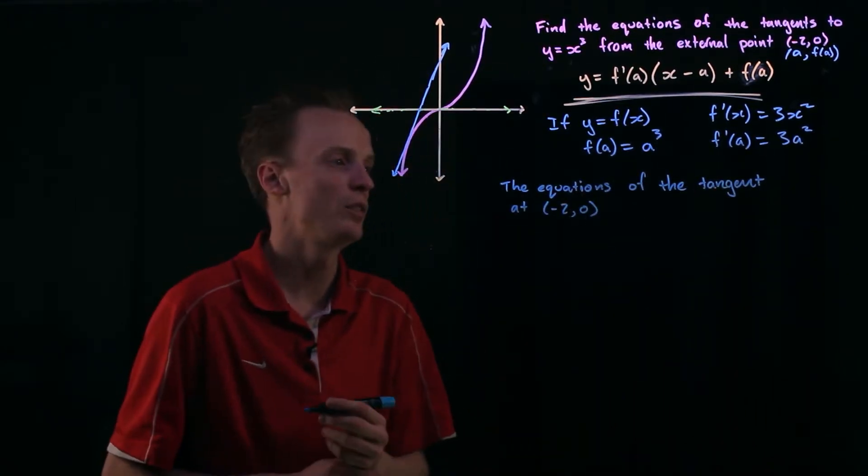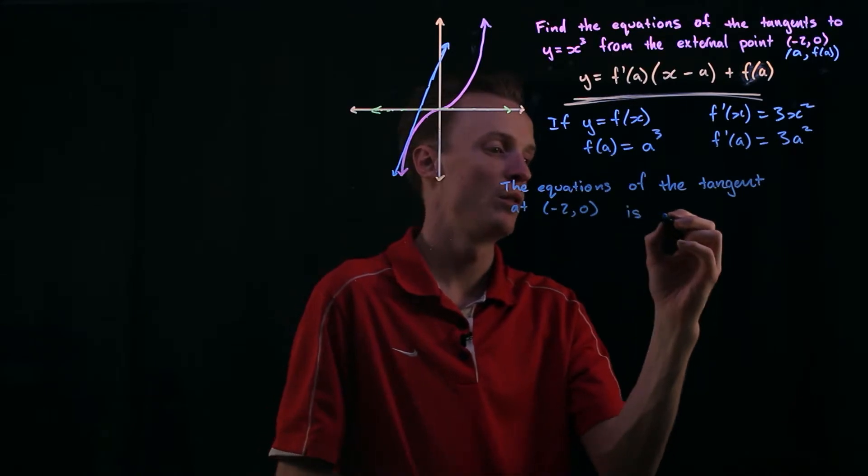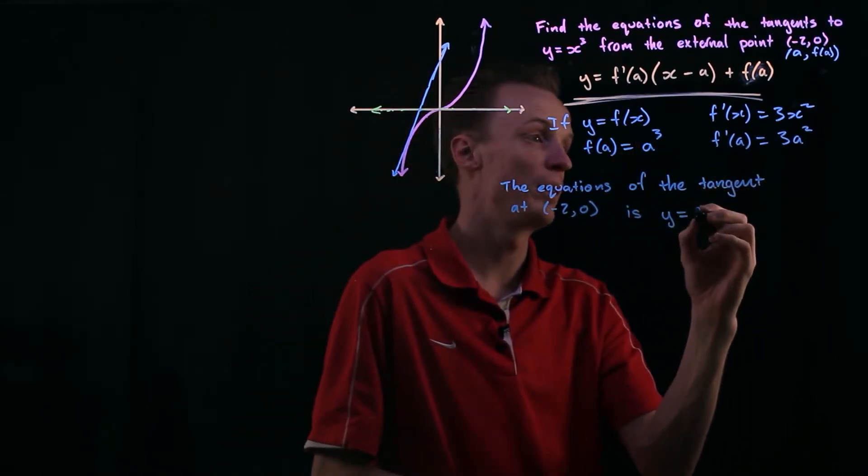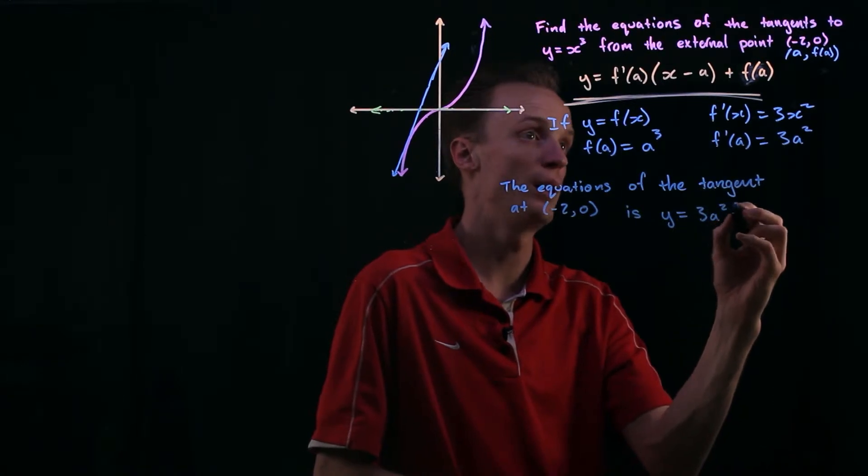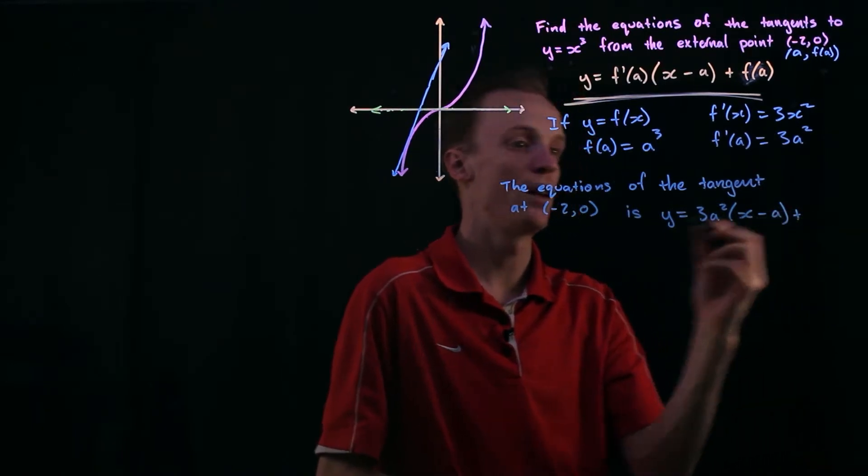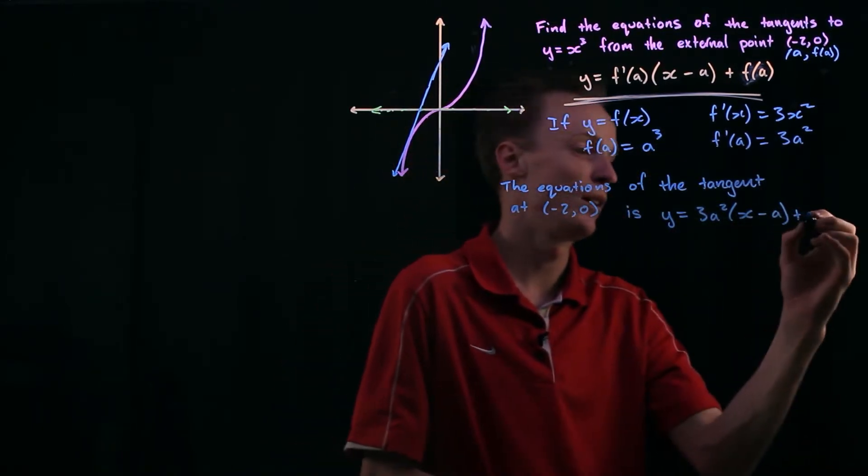at negative 2, 0 is y is equal to the f dash of a which is going to be 3a squared multiplied by x minus a and then add the f of a and the f of a is a cubed.